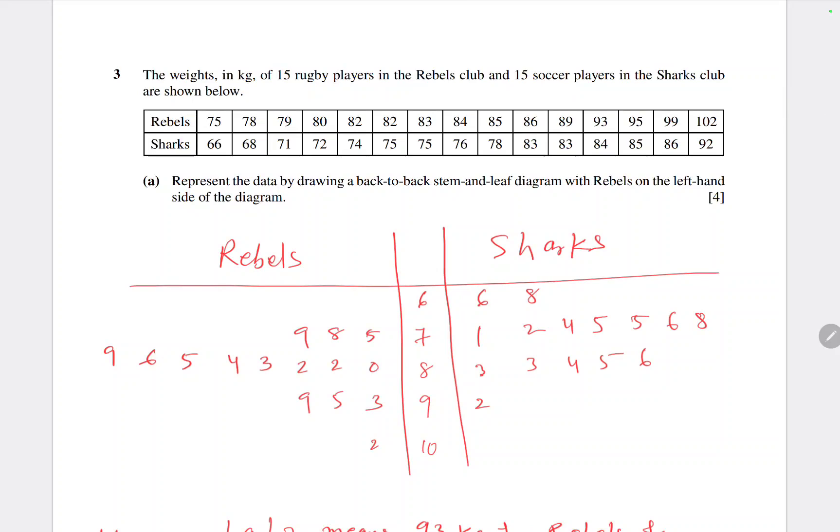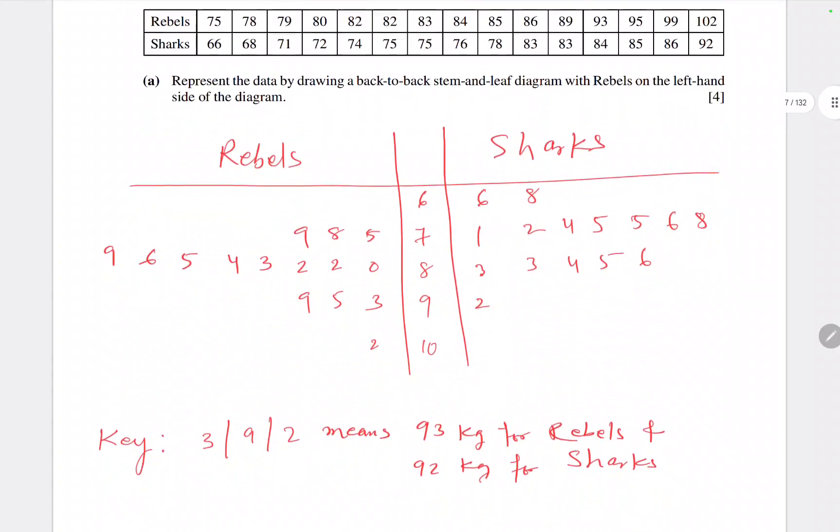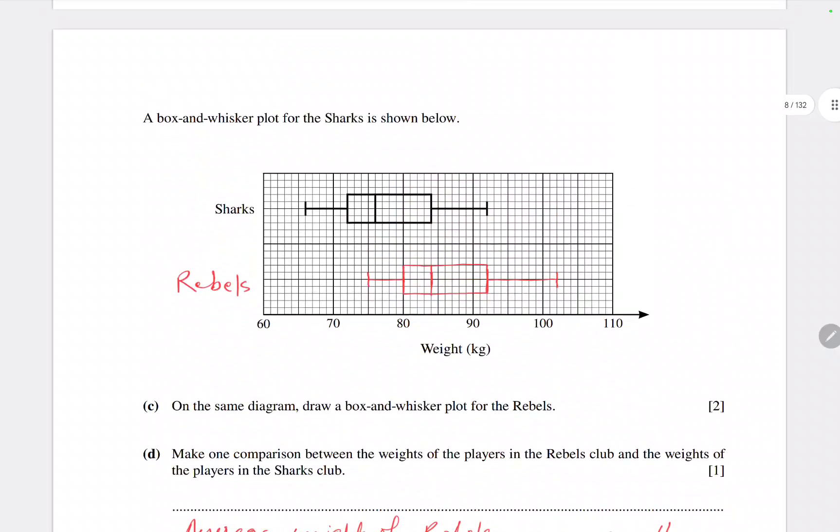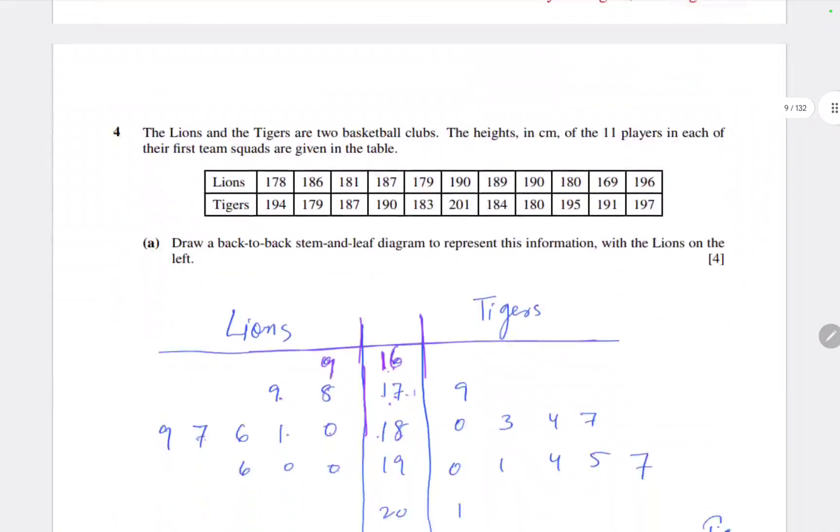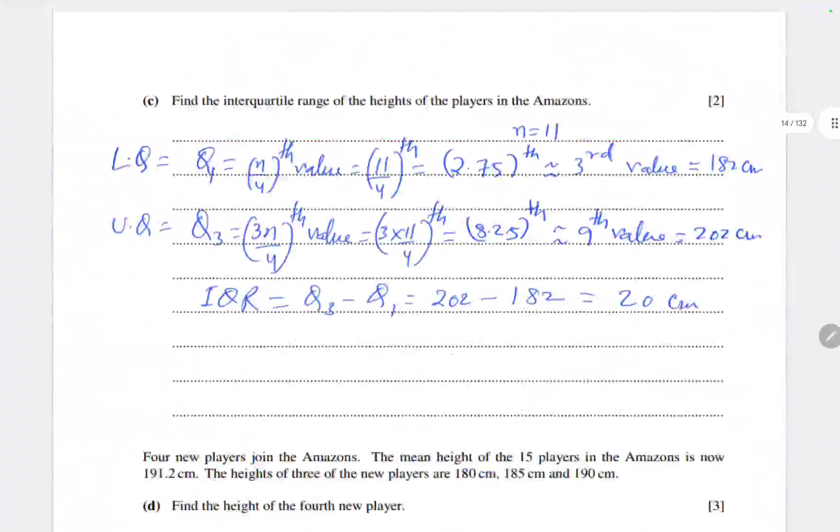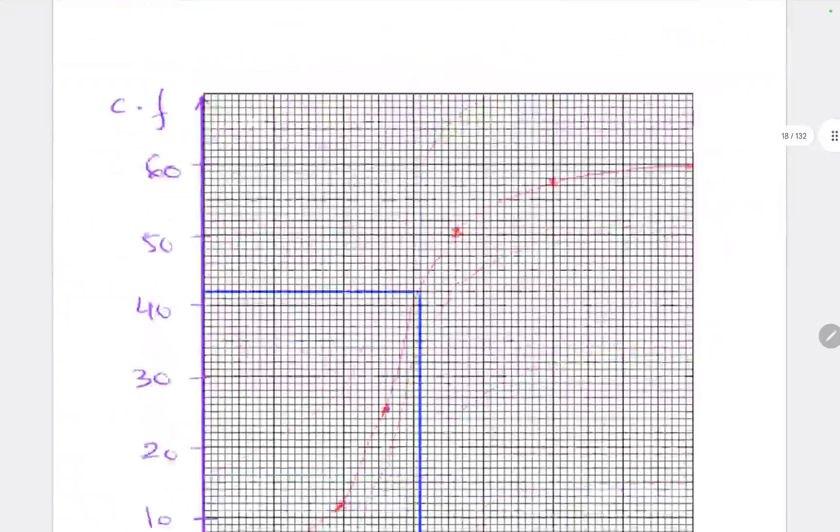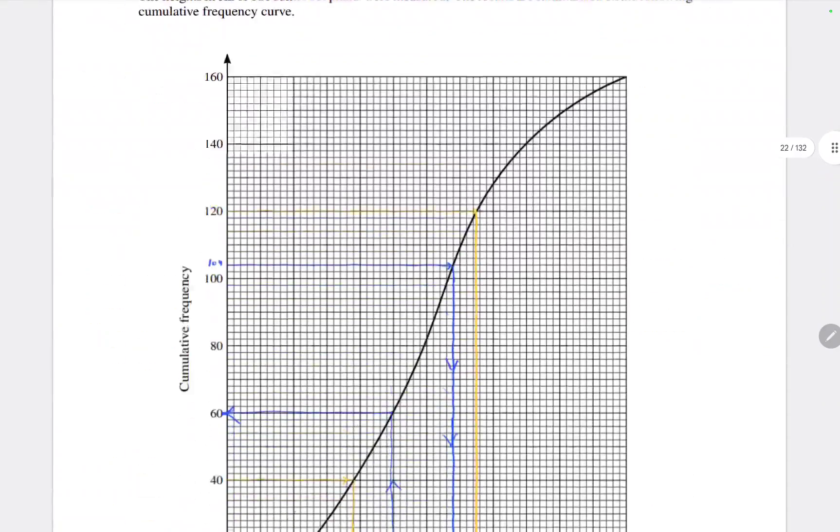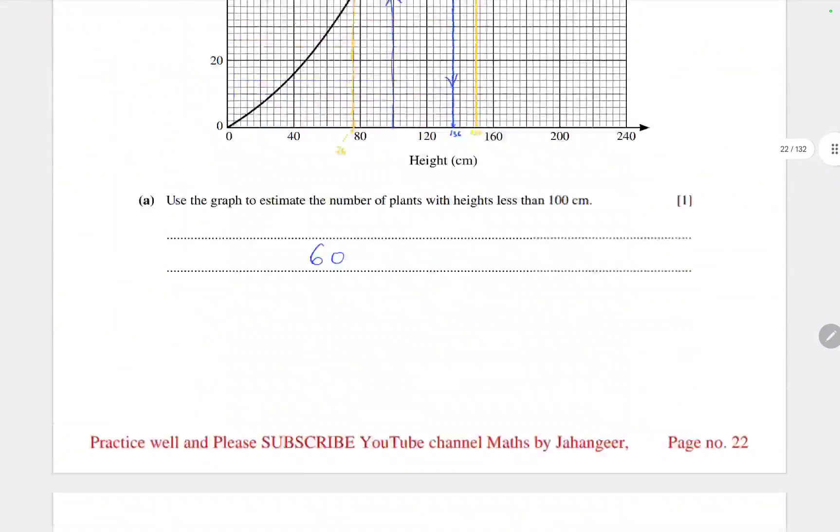This is question number three. That's a different concept, that is stem and leaf diagram. So here I try to explain the things. This is a box and whisker plot. So similarly, there are many, many questions for you. You can just check for part one.